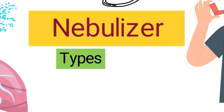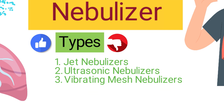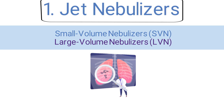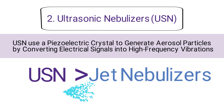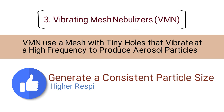There are three primary types of nebulizers used in aerosol drug therapy: jet nebulizers, ultrasonic nebulizers, and vibrating mesh nebulizers. Jet nebulizers are the most common type, including small volume and large volume nebulizers commonly used in the acute care setting. Ultrasonic nebulizers use a piezoelectric crystal to generate aerosol particles by converting electrical signals into high-frequency vibrations and can generate a higher aerosol output than jet nebulizers. Vibrating mesh nebulizers use a mesh with tiny holes that vibrate at a high frequency to produce aerosol particles, offering a consistent particle size and higher respirable fraction than jet nebulizers.